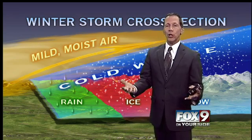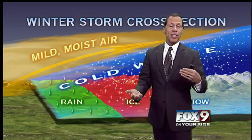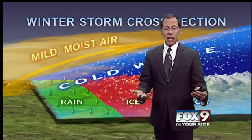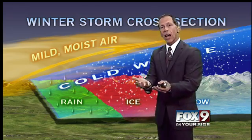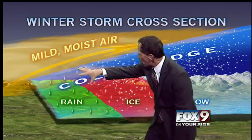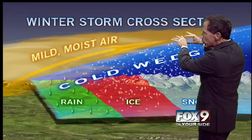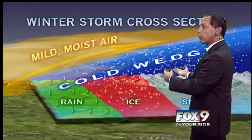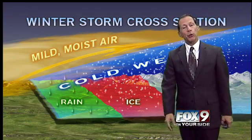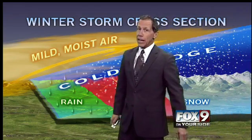How much precipitation do you need? How much moisture? It's pretty much the same as you'd need for rain. You just have to cause air to rise — get that warm air rising up over cold air — and that snow will begin to fall. It all depends on the temperature.